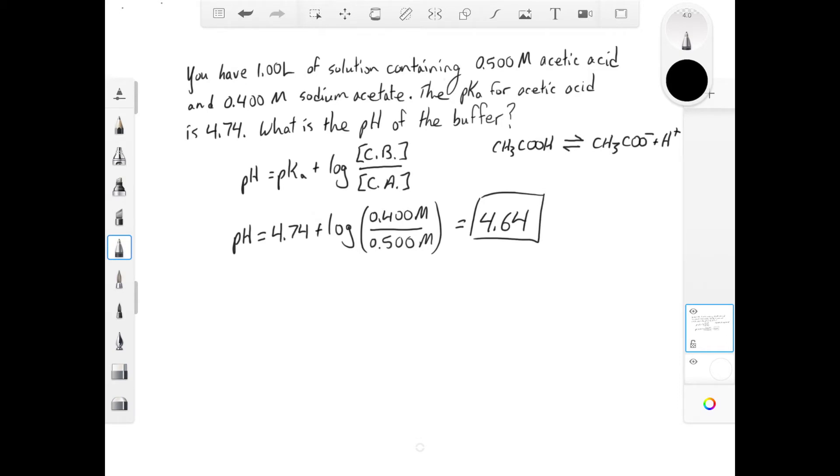And we come up with an answer of 4.64 for our pH. If our weak acid, weak base pair had equal concentrations, that log term would go to 0 and the pH would equal the pKa. In our case, however, we have slightly more acid, so you would expect the pH to be slightly less than the pKa.